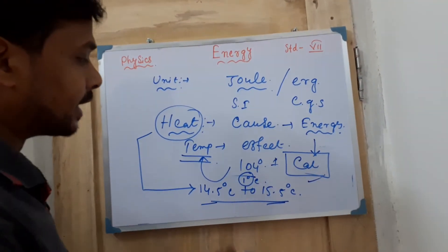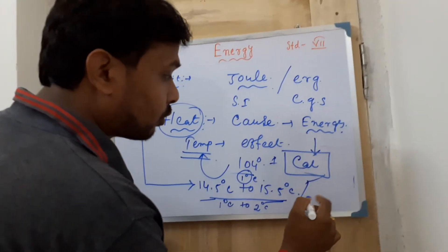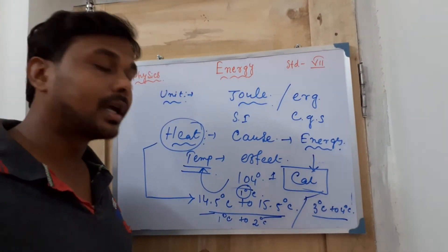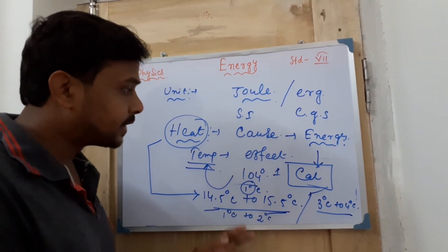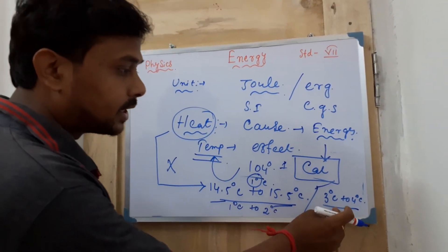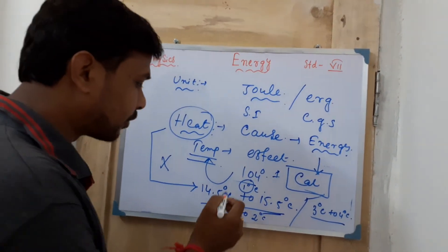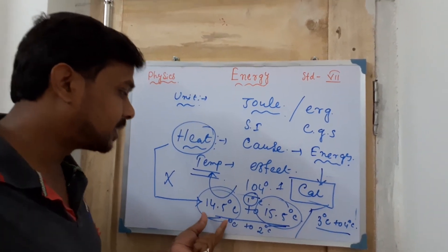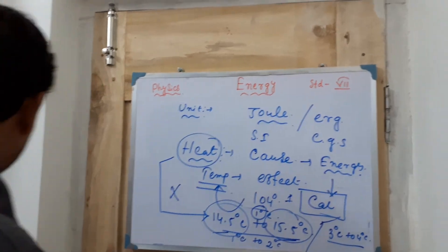From 14.5 to 15.5 degrees centigrade, the heat required is one calorie — that is the definition. In higher classes, you may wonder why we don't start from 1°C to 2°C, or 3°C to 4°C — everywhere the change is 1 degree, so why specifically 14.5 to 15.5? That is because in higher classes you will read about specific heat — due to specific heat, this particular range is taken into consideration.